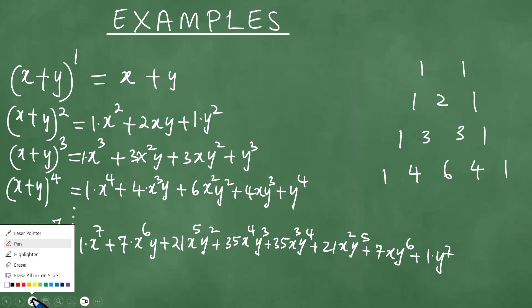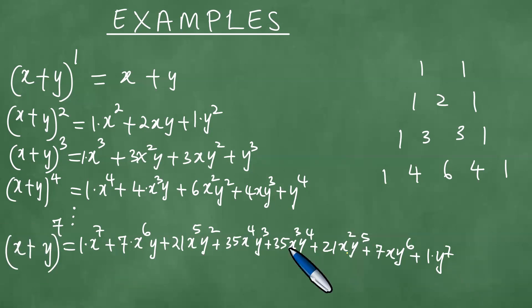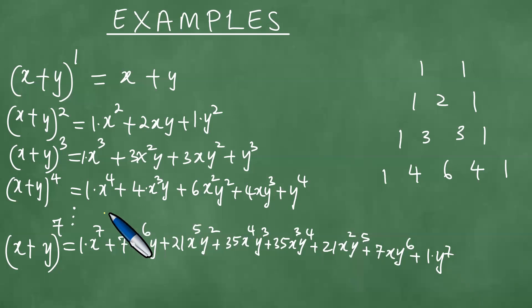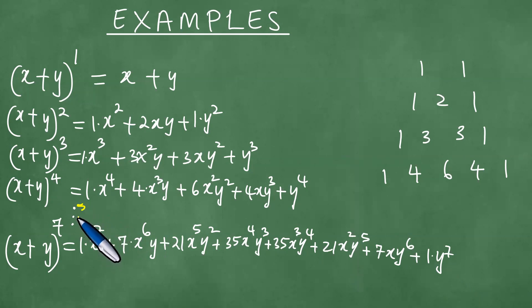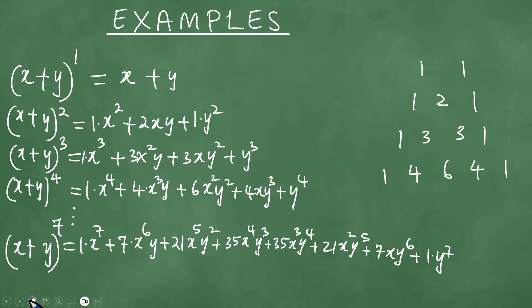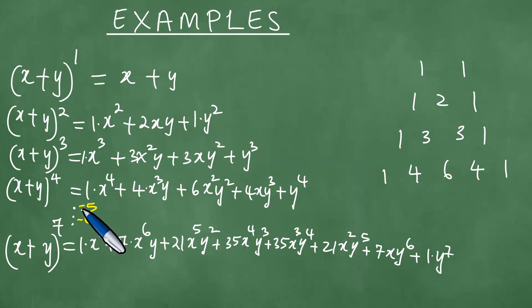You can see that this corresponds to the row of Pascal's Triangle for the seventh power. We go through powers 5, 6, and then 7. These are the powers we used to arrive at the seventh-power row of the triangle.